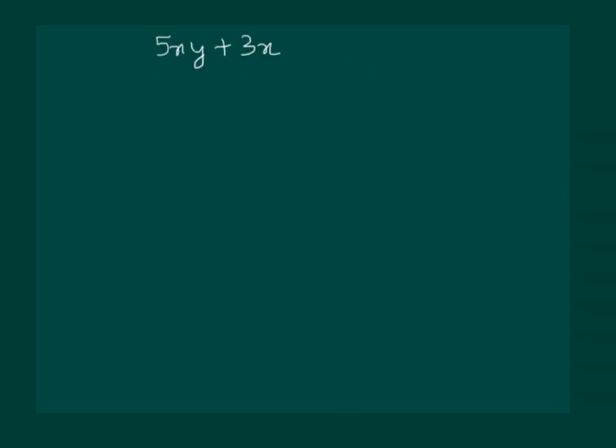We understood that if we had to find the factors of 5xy, it is 5, x and y. Similarly, we can also find the factors of 3x. It will be 3 and x. But what if we have to find the factor of the whole algebraic expression?